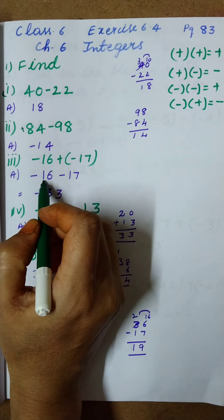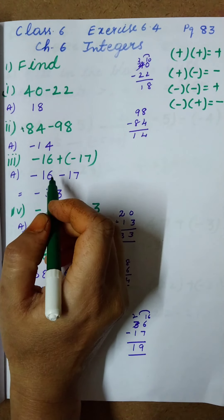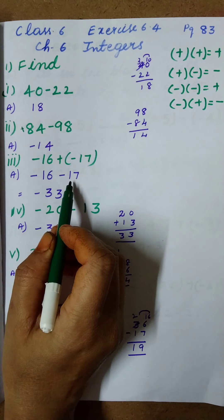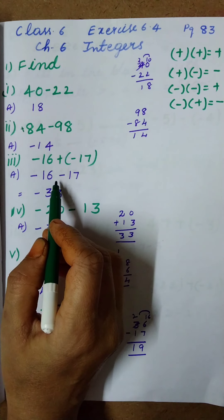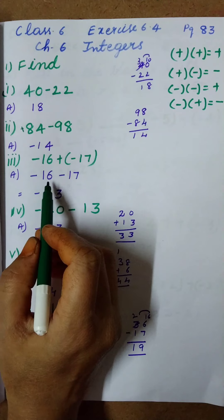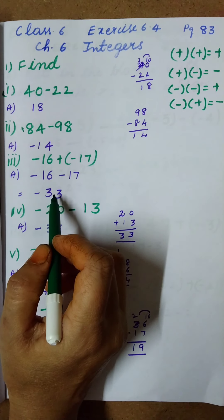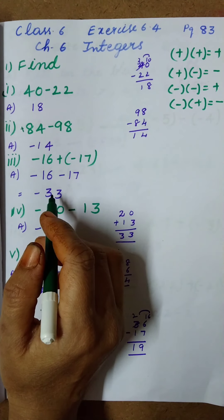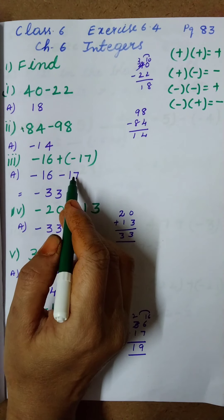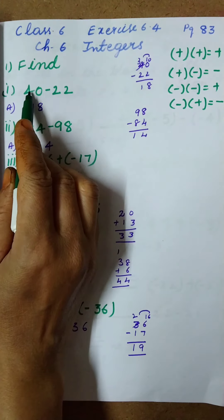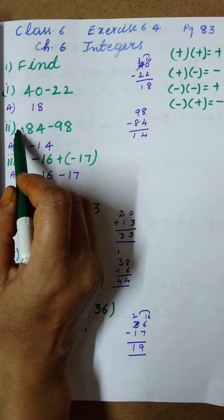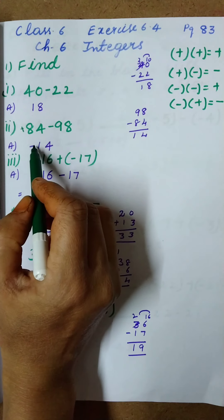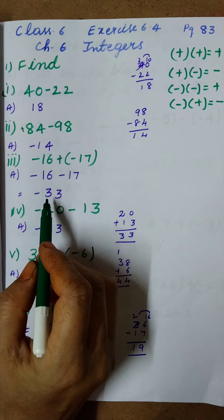Next one: minus 16 minus 17. There are two signs; we make them into one. Plus into minus gives minus, so we write minus 17 as is. Now we have minus 16 minus 17. Minus into minus gives plus, so we do addition: 16 plus 17 equals 33. Both numbers have a minus sign, so we put minus. The biggest number is 17 and its sign is minus, so the answer is minus 33.